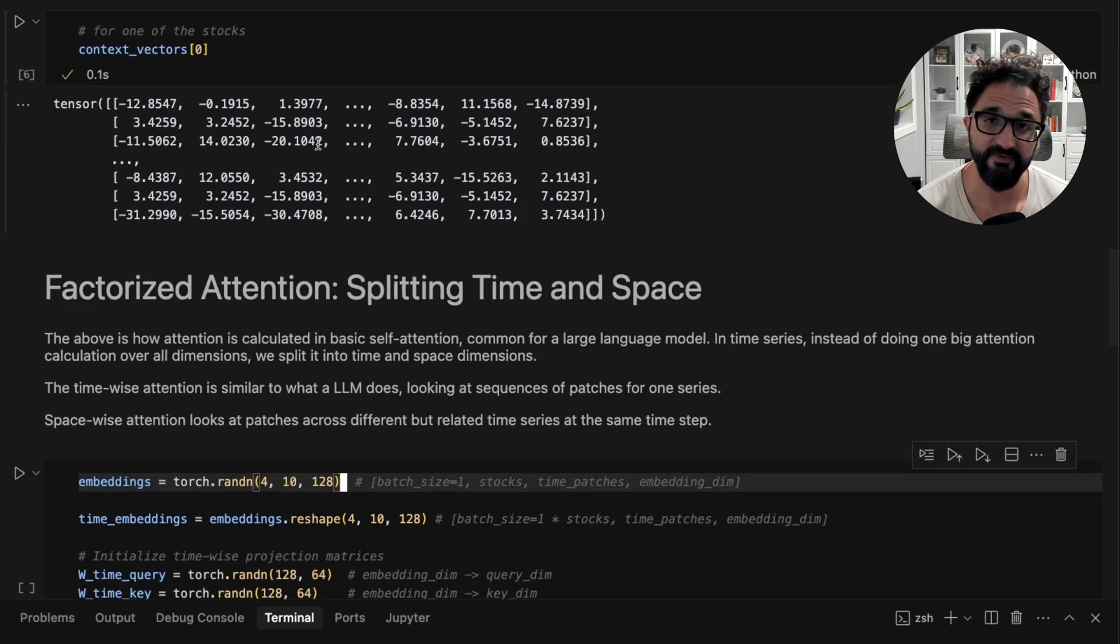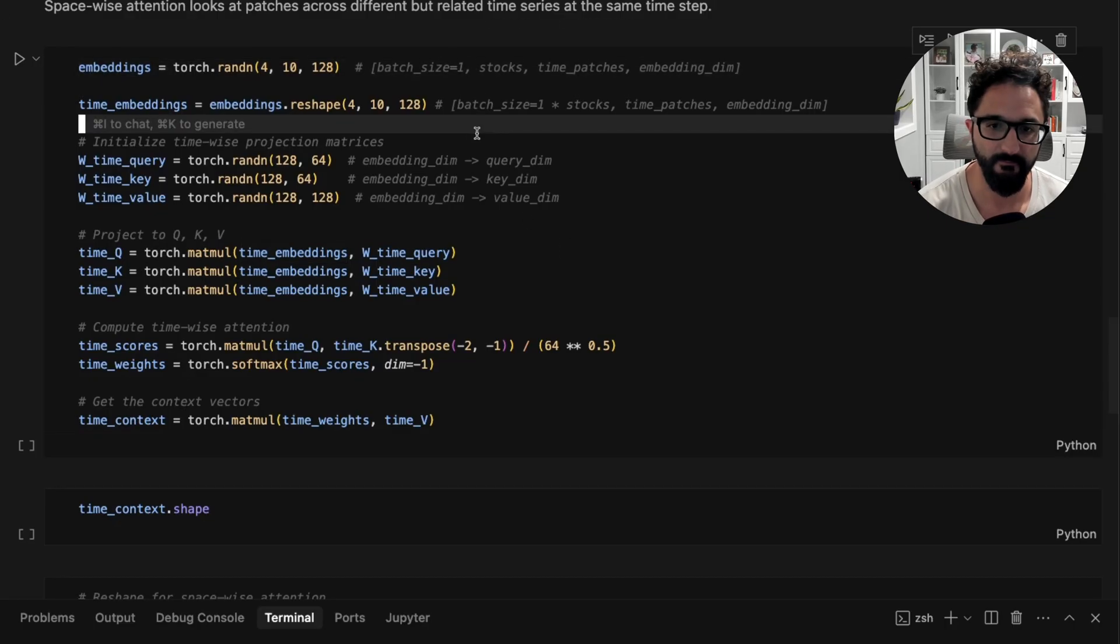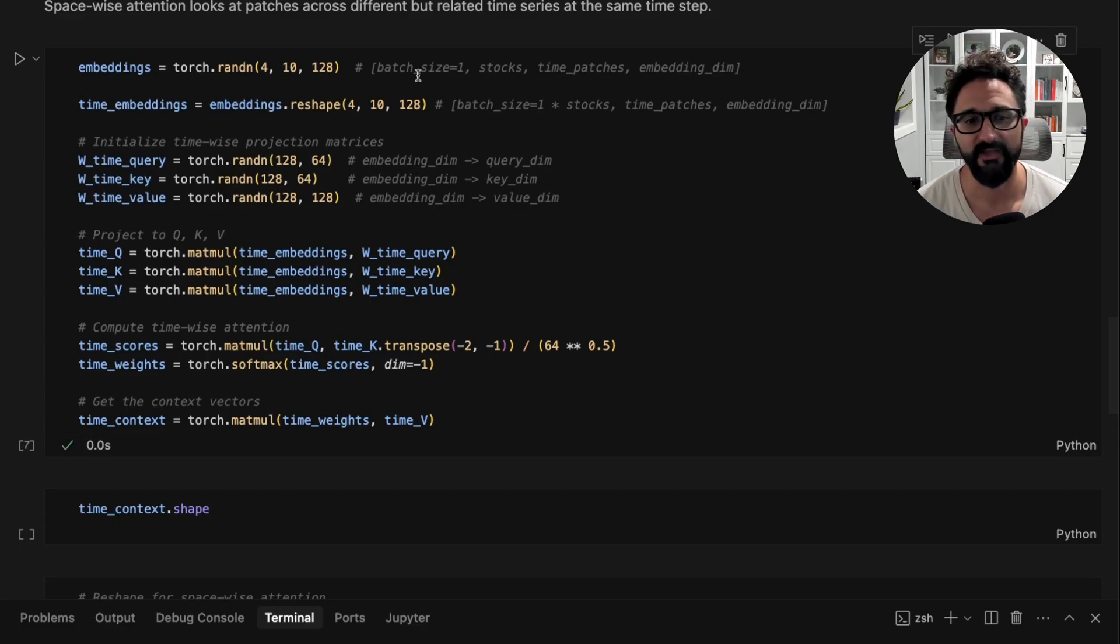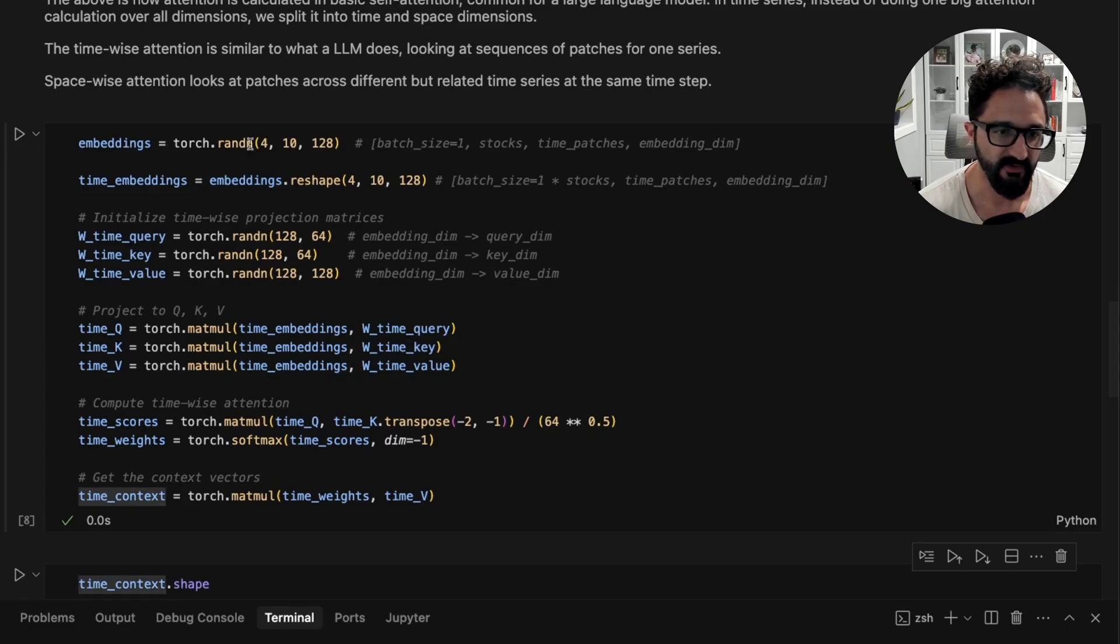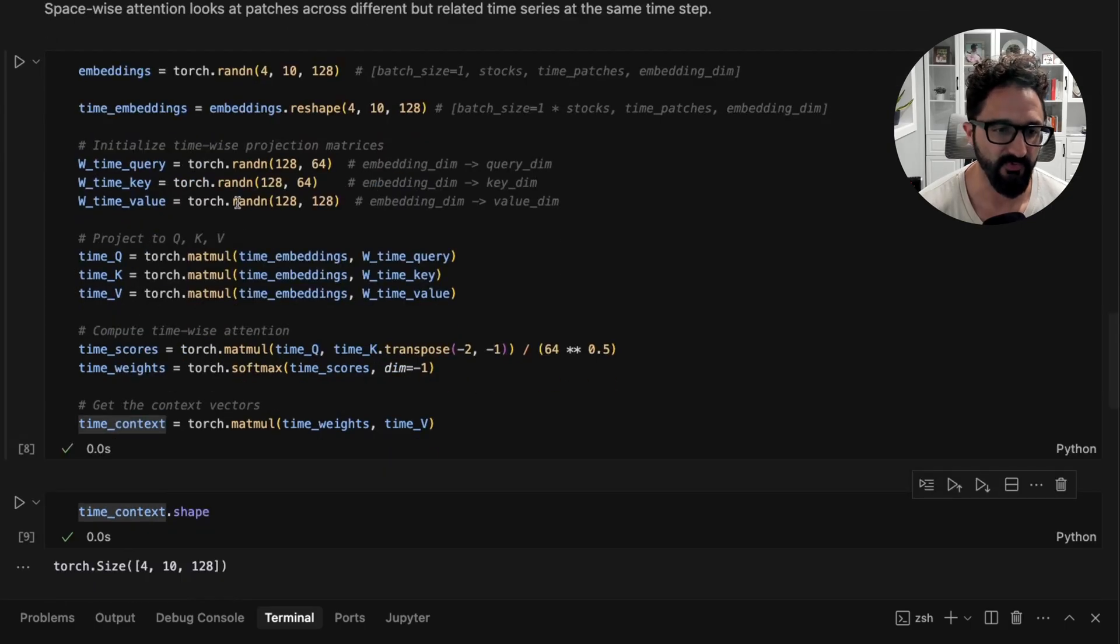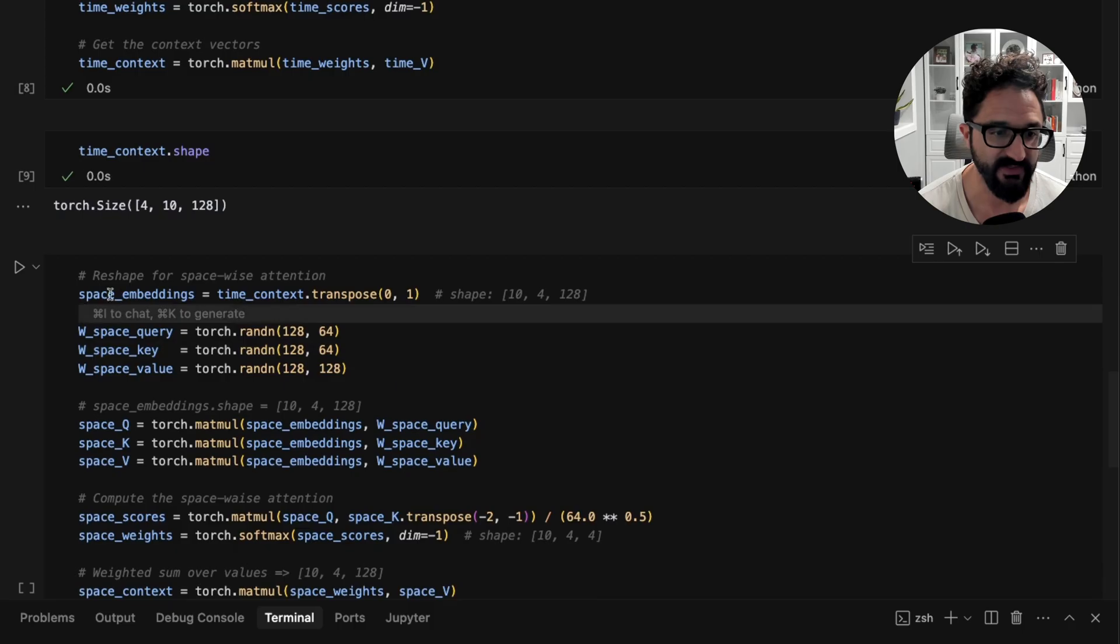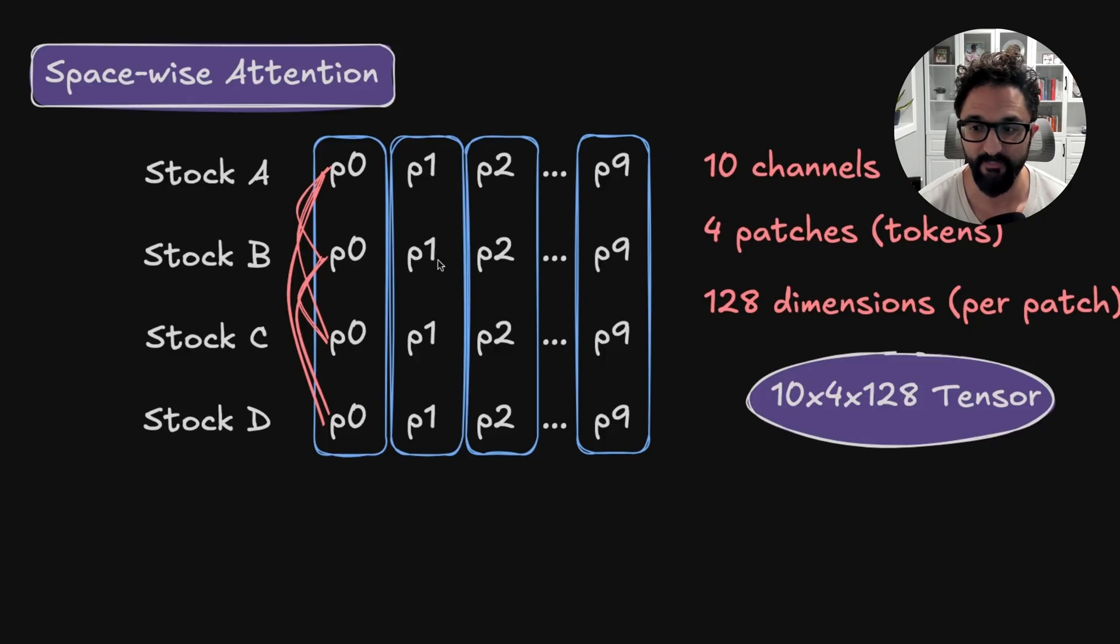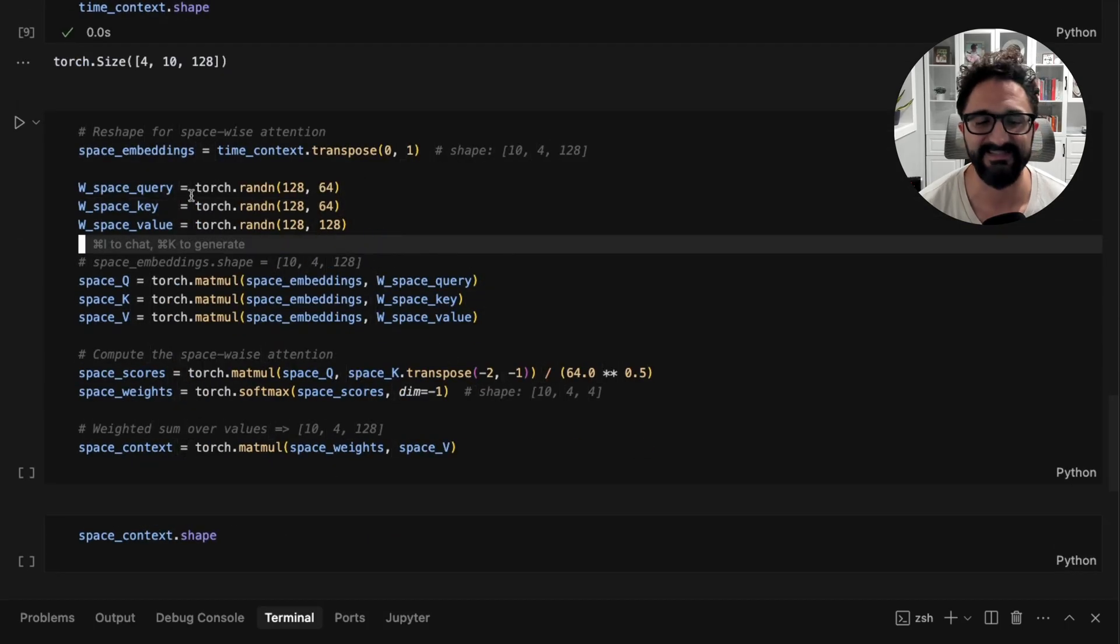We need to reshape our data into that and then walk through the same attention mechanism. In reality, what you would do is take the context vectors with the timewise attention and then pass them into the spacewise attention block. But for simplicity, I'm just going to recreate our embeddings to the initial 4, 10 by 128 size. You can see here we're assuming a batch size of one. Also in reality, you can have larger batch sizes so you can train more things in parallel. So down here, we're just going to replay our timewise attention step, which looks exactly the same as above. We have our 4, 10, 128 tensor, we compute our time embeddings, and now we have our vectors with context added to it. Now we need to reshape our time context here to this 10 by 4 by 128 such that our embeddings now look like this, and we can capture the spacewise attention as well.